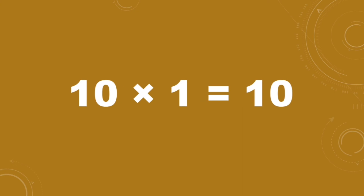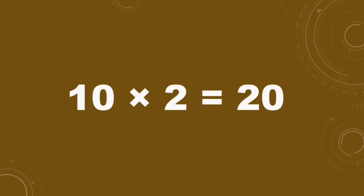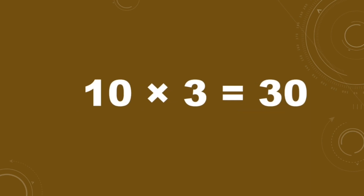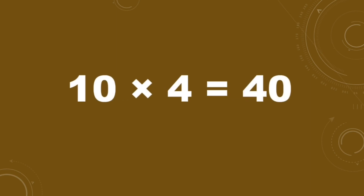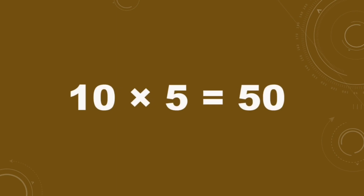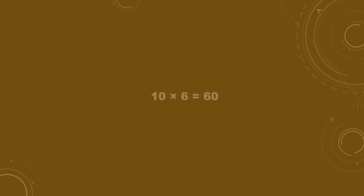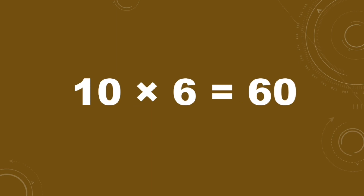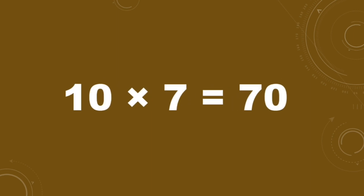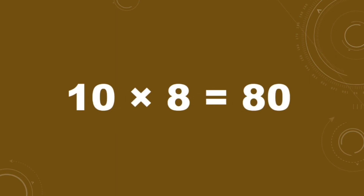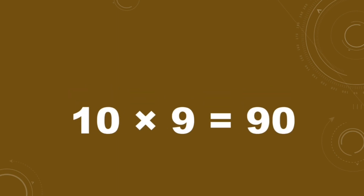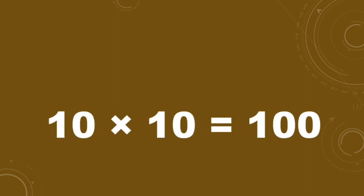Table of ten. Ten ones are ten, ten twos are twenty, ten threes are thirty, ten fours are forty, ten fives are fifty, ten sixes are sixty, ten sevens are seventy, ten eights are eighty, ten nines are ninety, ten tens are one hundred.